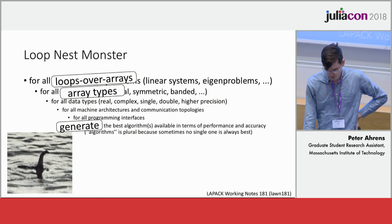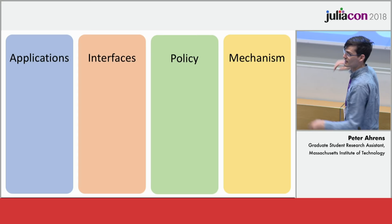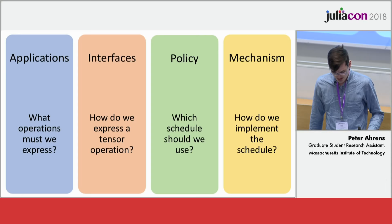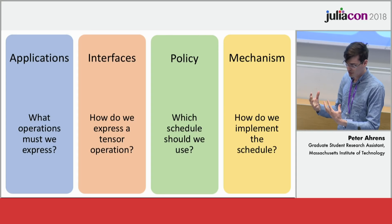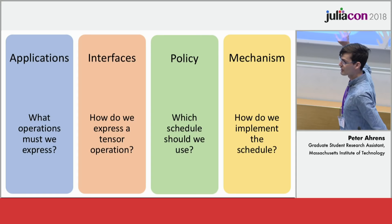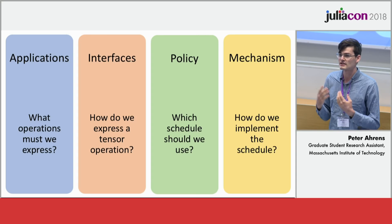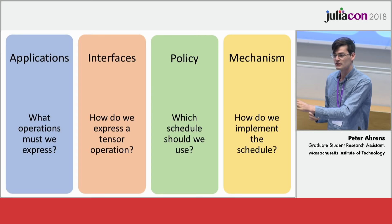If you're going to write something that can compile a tensor operation, you need to answer a couple of questions. All software is about lasagna stacks. We have applications, interfaces, policy, and mechanisms. Applications answer what operations we need to support. The interface expresses those operations. Policy and mechanism are two phases of compilation — policy determines a schedule or high-level directives of how we execute our code, and mechanism is the process of going from that schedule to fast parallel code.